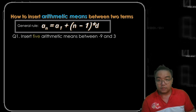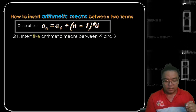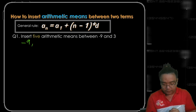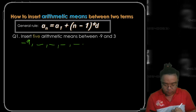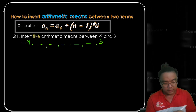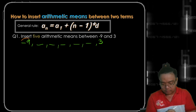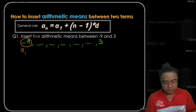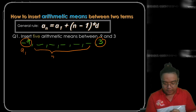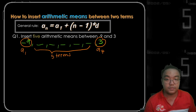First question: insert five arithmetic means between negative 9 and 3. So basically we have negative 9 as our first term and then we have to insert 1, 2, 3, 4, 5 terms in between negative 9 and 3. This is our first term, 3 is our last term, and since we are to insert 5 terms in between, 3 is our a sub 7, or the 7th term.